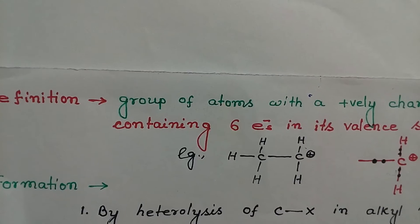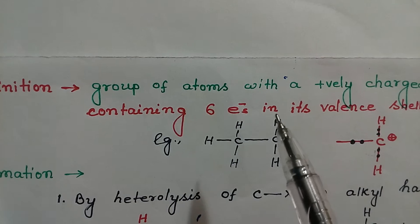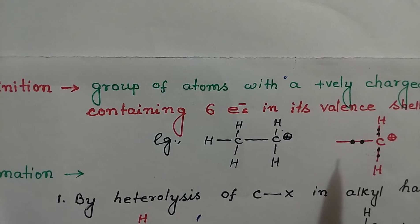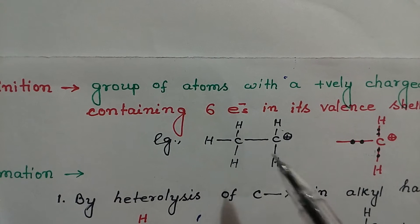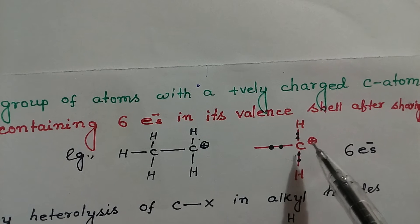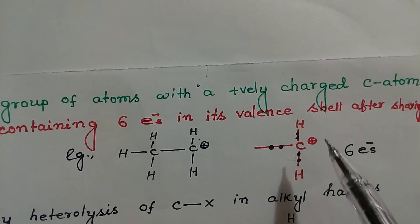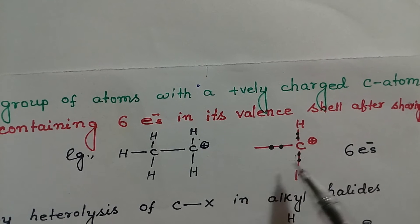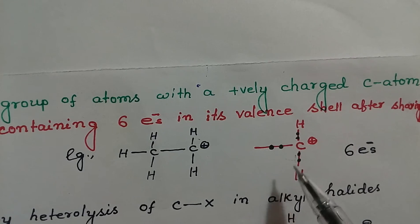A carbocation is a group of atoms with a positively charged carbon which contains 6 electrons in its valence shell after sharing. For example, ethyl carbocation. Here, carbon is positively charged and 3 bonds are associated with it. So, a carbocation is a species containing a carbon which is positively charged and has 6 electrons in its valence shell.